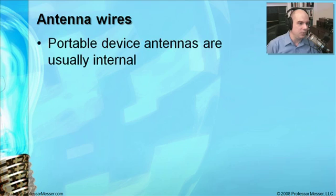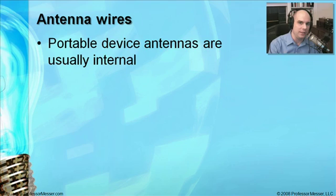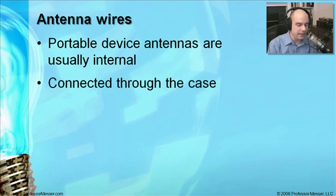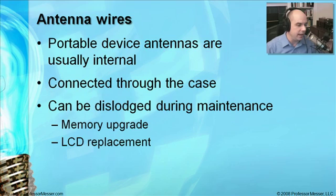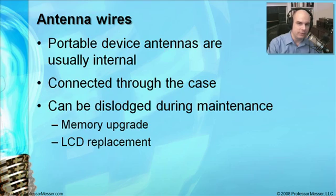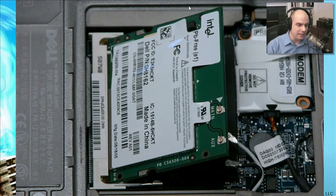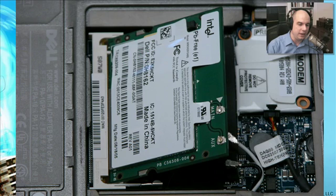Another thing to be aware of is antenna wires. Laptops, PDAs, and phones with wireless capability all have internal antennas — even if you can't see them. These wires typically run from the top of the LCD screen all the way down through the hinge to the wireless expansion card at the bottom of the computer. If you're ever working inside the laptop — replacing memory or moving components — these wires can easily be dislodged. Be careful not to accidentally disconnect these tiny connectors on the 802.11 wireless card.